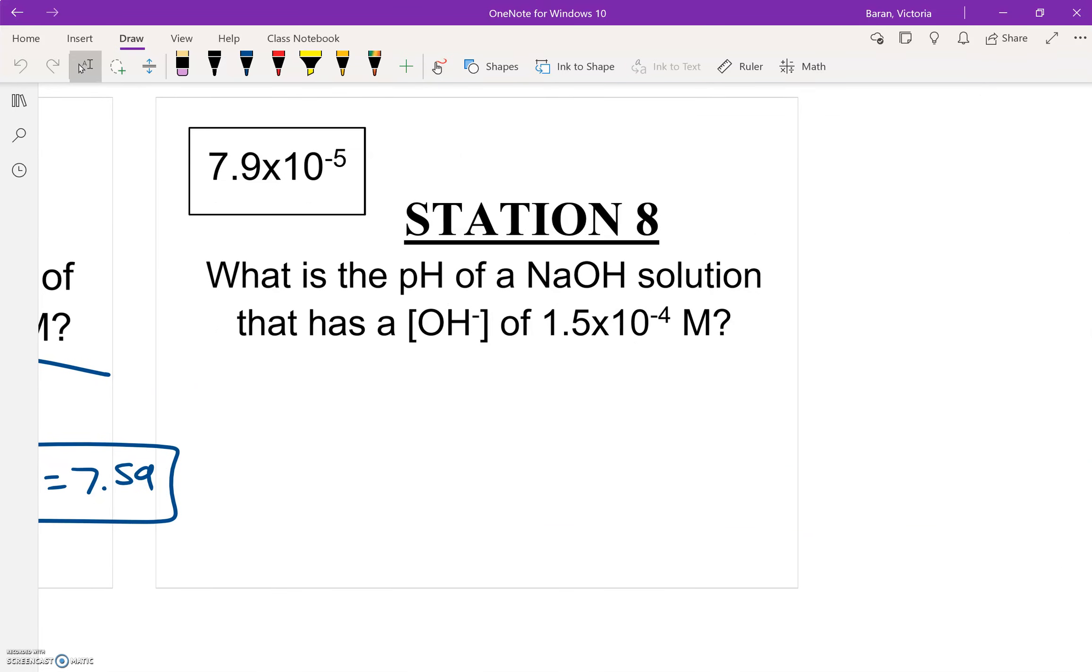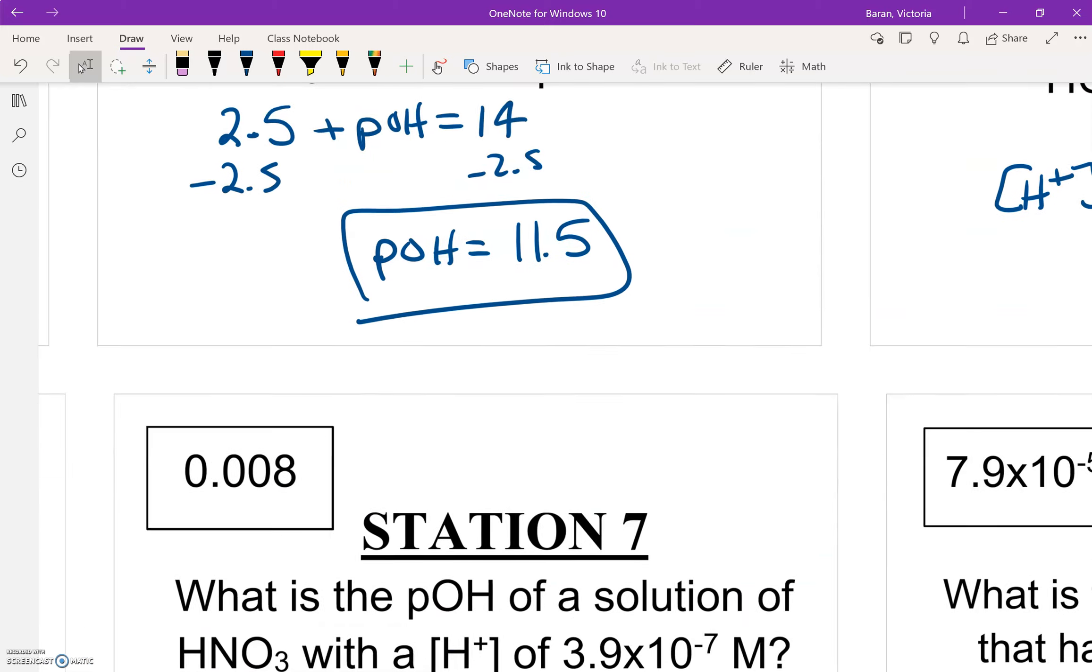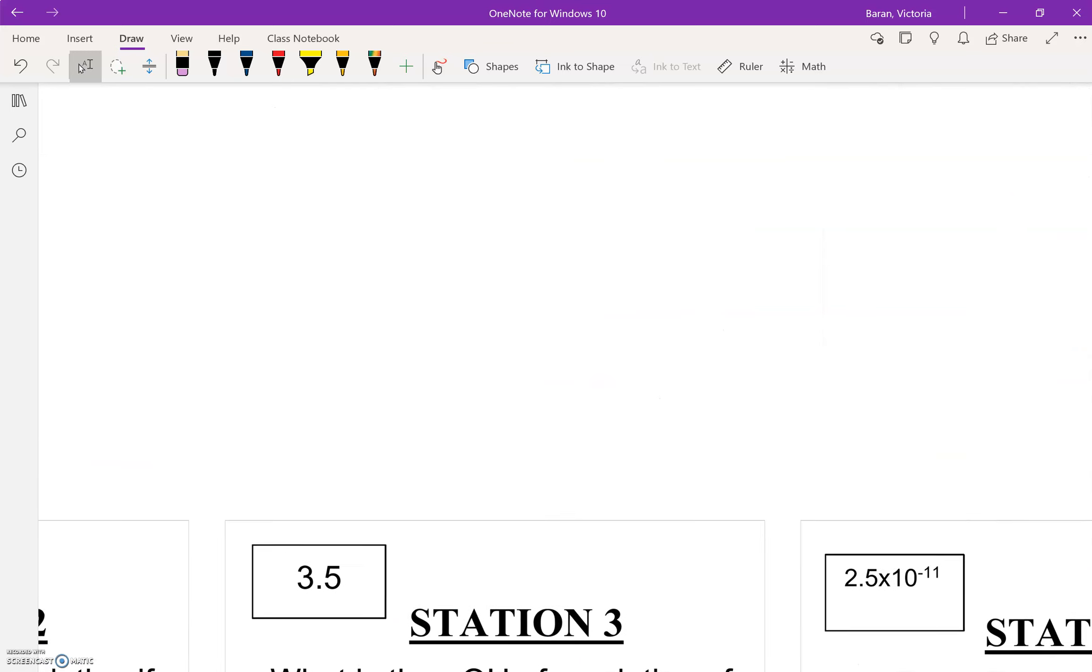So it says, what is the pH, that's what we're solving for, of an NaOH solution that has an [OH-] of 1.5×10⁻⁴ M? So this is going to be a multi-step one. So they gave us OH, so there's a couple of things that we can find.